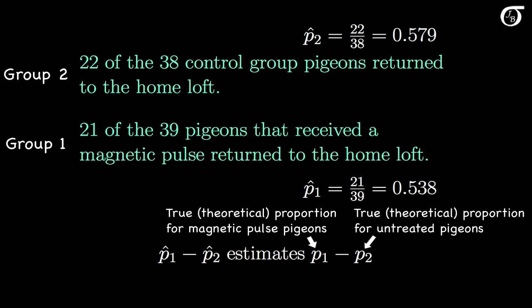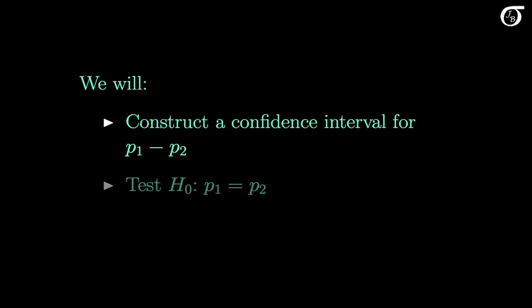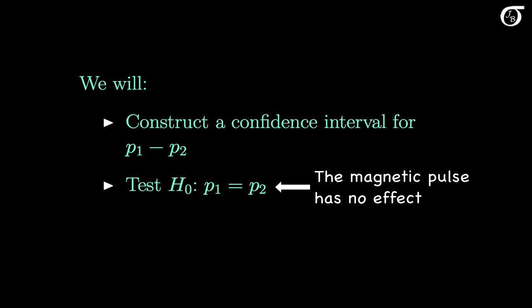In situations like this, we often want to estimate the difference in population proportions, p1 minus p2. So in this video we are going to construct a confidence interval for p1 minus p2, and we are also going to test the null hypothesis that the population proportions are equal. This would mean that the magnetic pulse had no effect on the proportion of pigeons that returned to the home loft. If we can reject that null hypothesis, that would mean there is strong evidence that the magnetic pulse did have an effect.